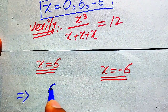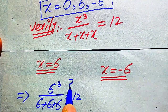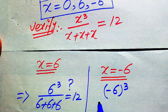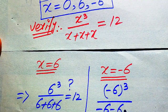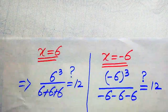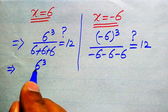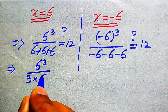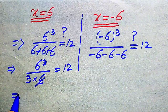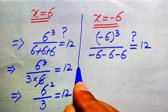Substituting x equals 6: we get 6 cubed divided by 6, plus 6 plus 6. In the denominator, 6 is added three times, giving 3 times 6. The 6 and 3 partially cancel, leaving 6 squared divided by 3 equals 12. Moving 3 to the right: 36 equals 36. Both sides are equal, so x equals 6 is a valid solution.